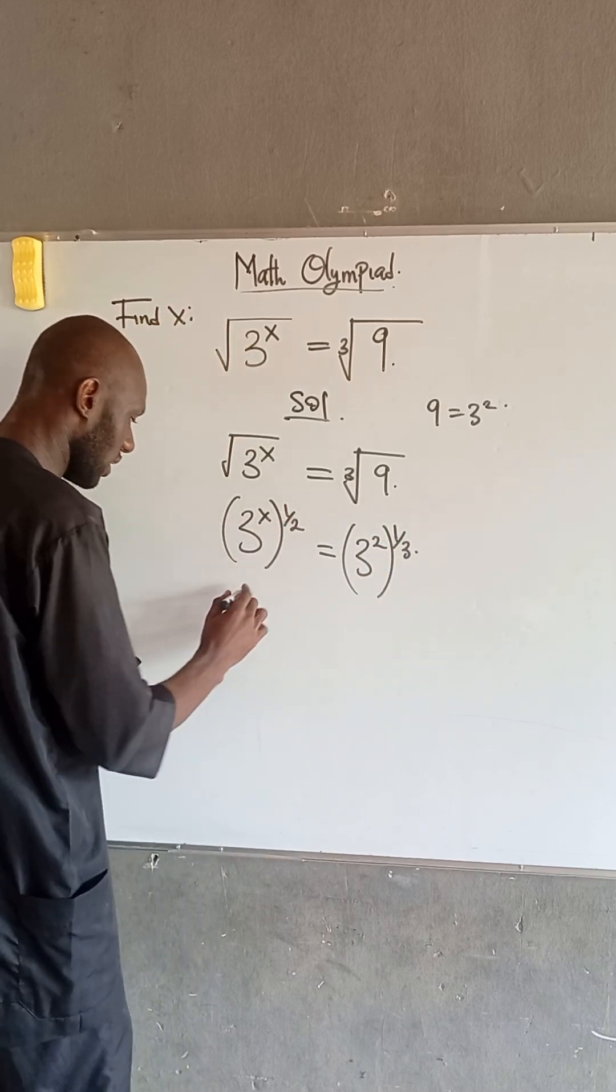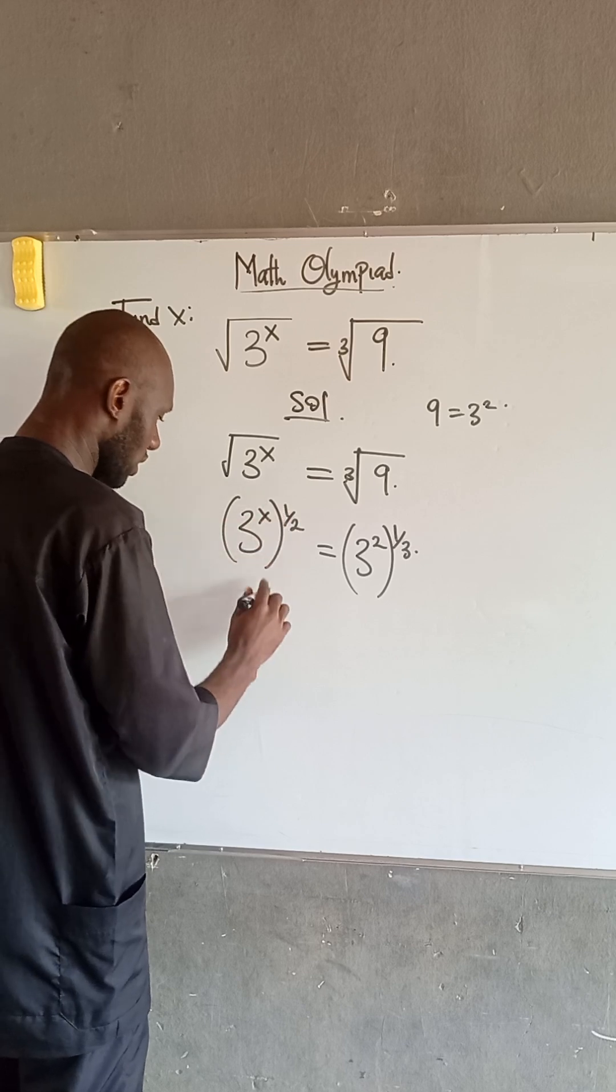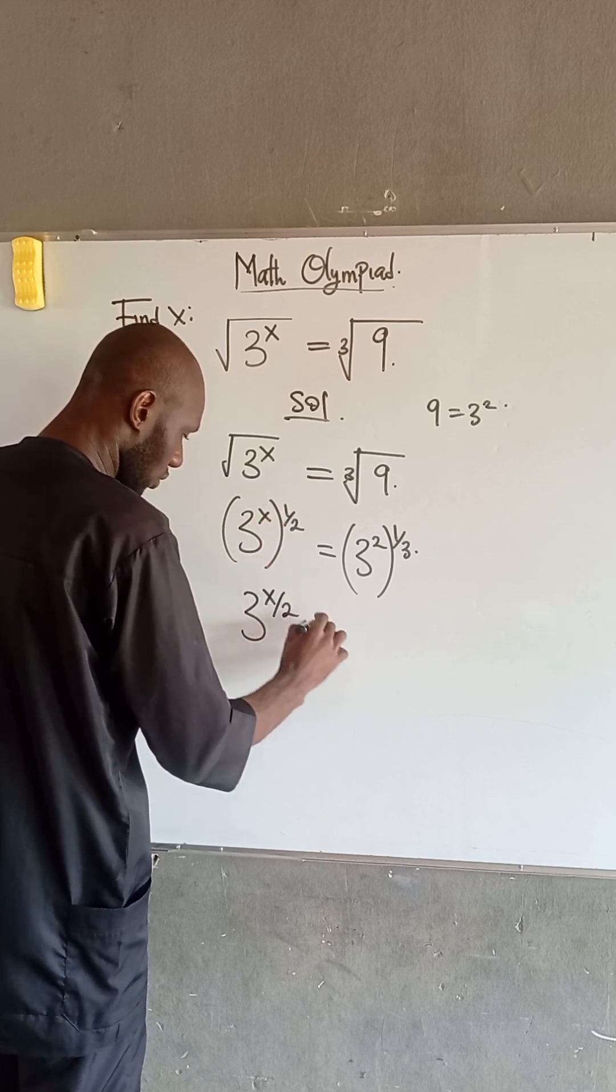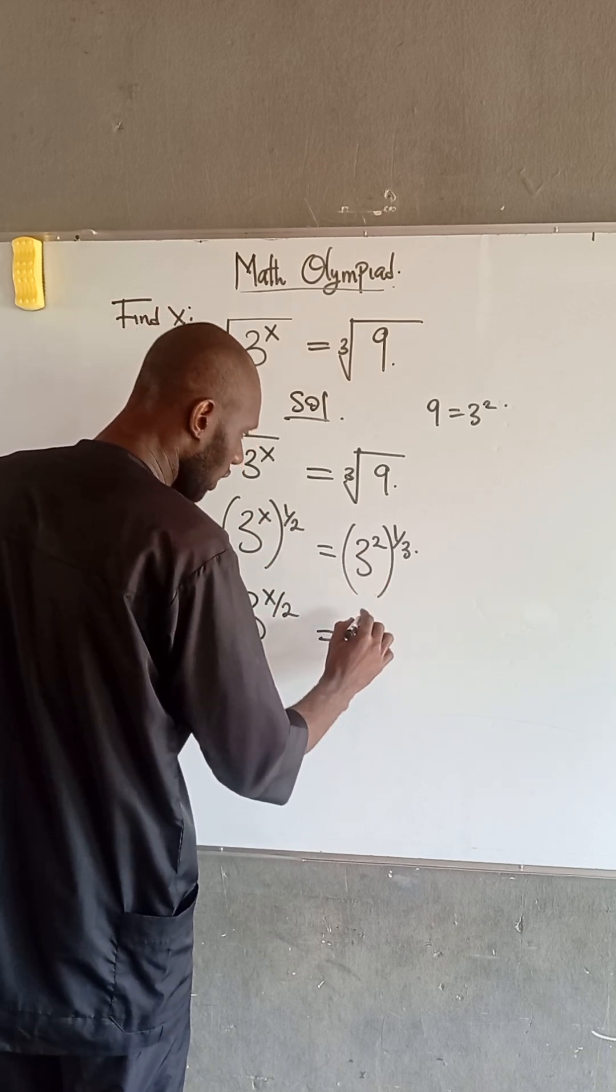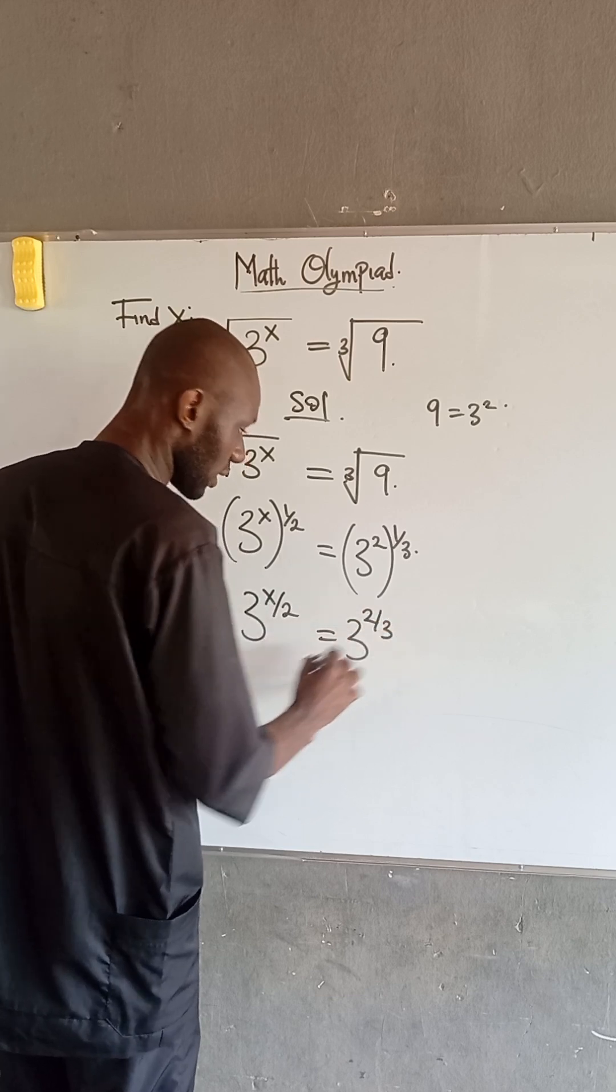Therefore, we have 3 to the power of x times 1 is x divided by 2, equal to 3 to the power of 2 divided by 3.